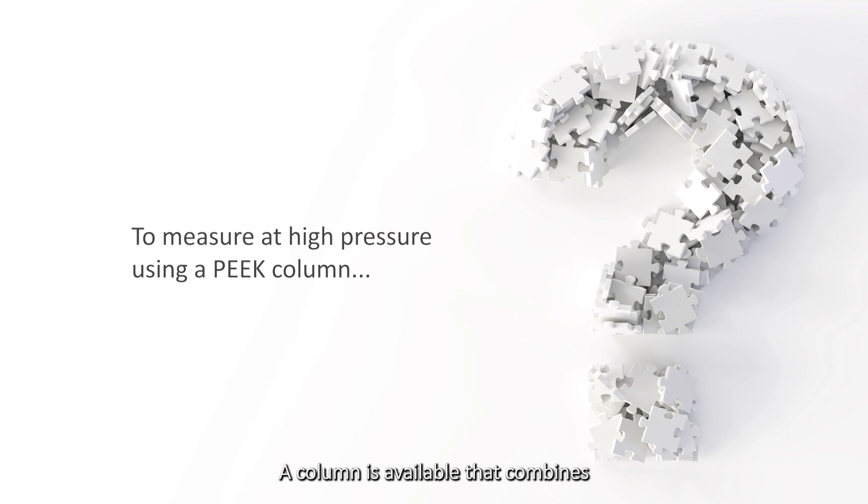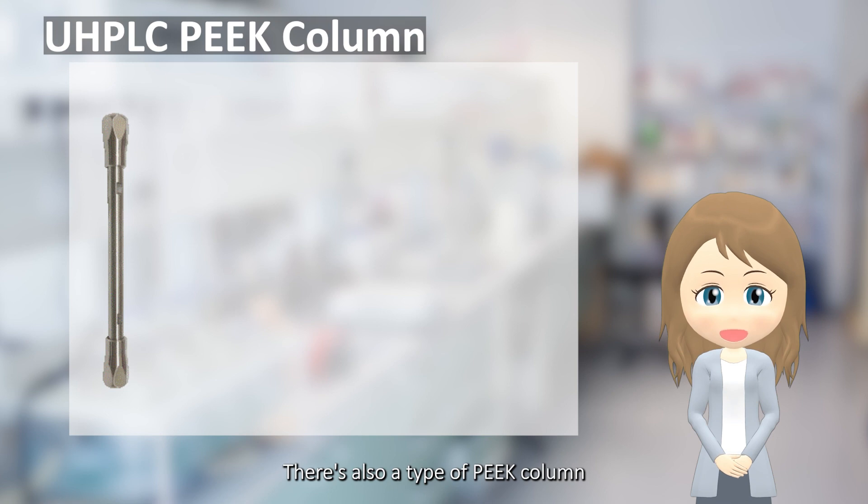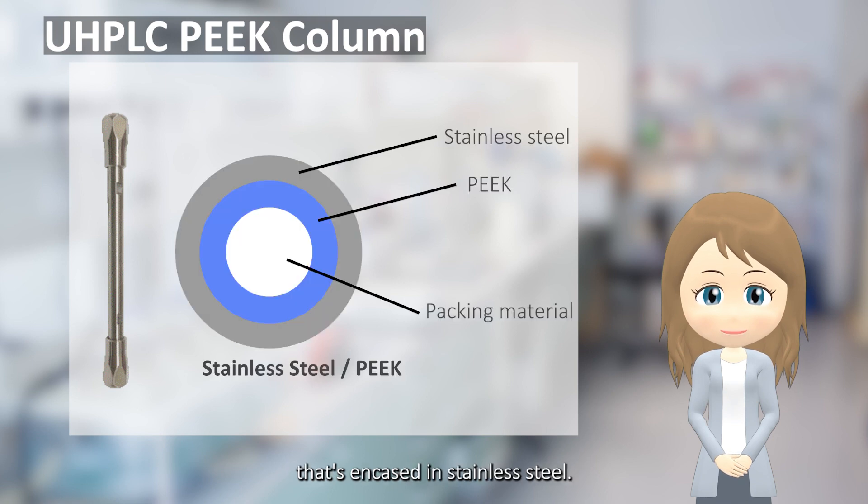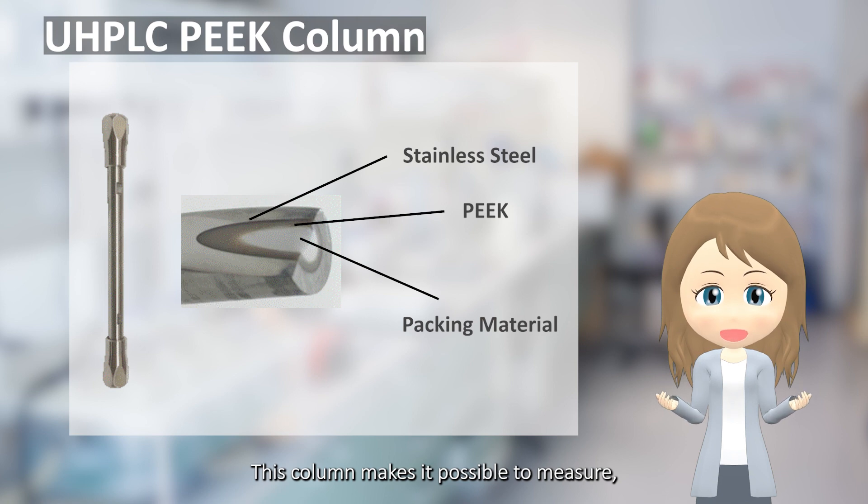A column is available that combines the advantages of stainless steel and PEEK. There's also a type of PEEK column that's encased in stainless steel. This column makes it possible to measure, at high pressure, samples that react with metals.